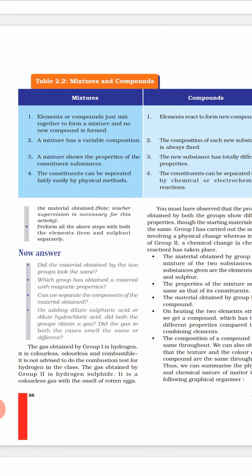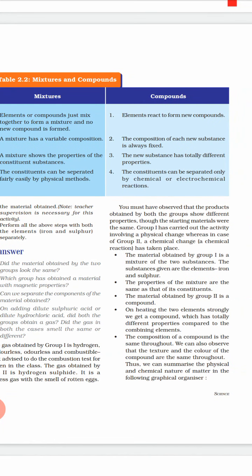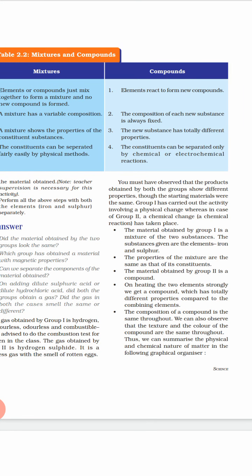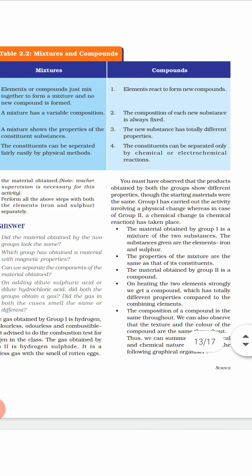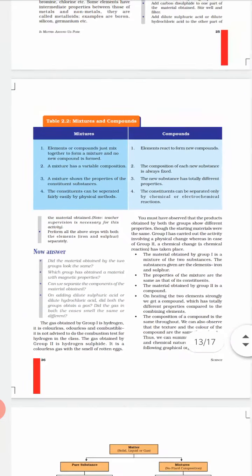But in a compound, the constituents can be separated only by chemical or electrochemical reactions. For example, water is H2O — if you want to separate hydrogen and oxygen from it, you cannot just physically pull them apart. You have to apply a chemical process. Physical methods like distillation, separating funnel, evaporation, or sublimation cannot separate the components of a compound. This is all about the difference between mixtures and compounds.